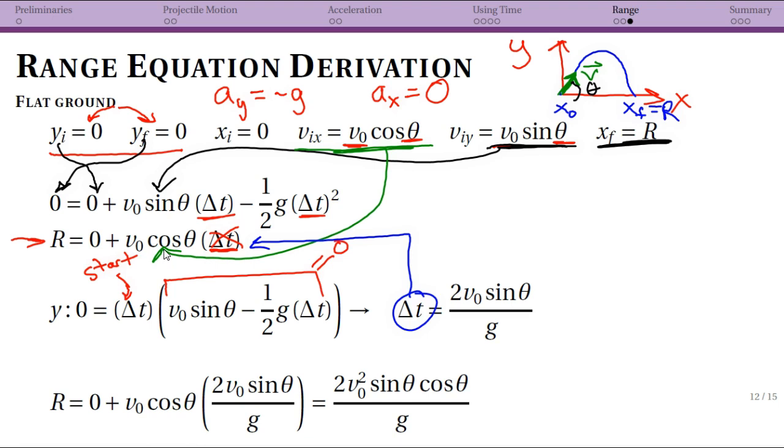Again this is where just simple little algebra mistakes can crop up if you're very focused on being overwhelmed by the physics and you're not just being careful in your work. So note that that's continued on, we've plugged in our delta t and now you multiply those out. Now this isn't actually the form that I originally showed you the range equation for, but this is a perfectly valid equation. You would not have any issue if you stopped here.